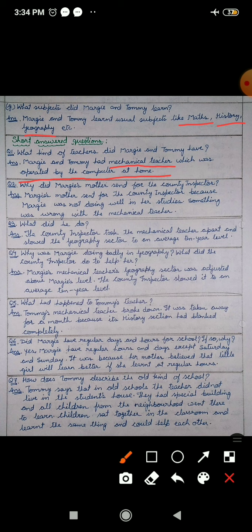Number two, why did Margie's mother send for the county inspector? Margie's mother sent for the county inspector because something was wrong with the mechanical teacher. Uske mechanical teacher mein kahin koi kami aa gayi thi. What did he do? Us county inspector ne kya kiya? The county inspector took the mechanical teacher apart, us county inspector ne mechanical teacher ko alag nikaal liya, and slowed the geography sector to an average tenure level, aur uska jo geography sector tha, usko thoda dheere kar diya.